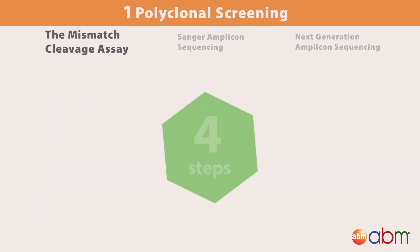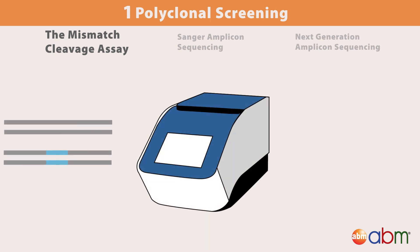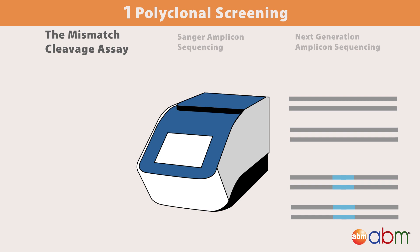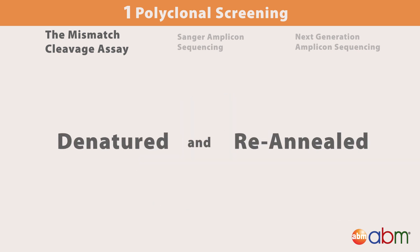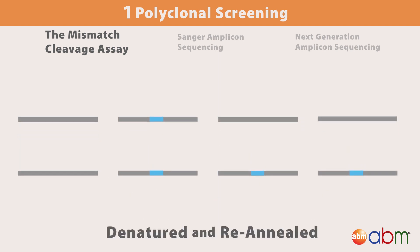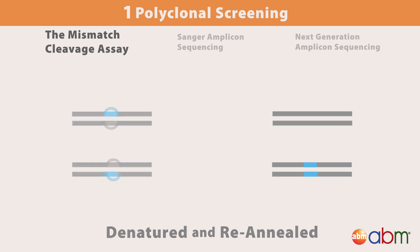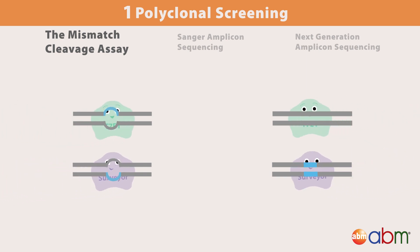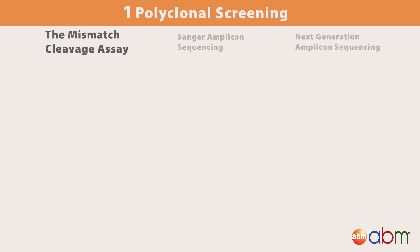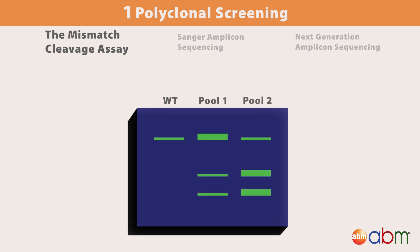These specialized nucleases create a double-stranded break at the site of a mismatch between two different strands of annealed DNA. The Mismatch Cleavage Detection Assay consists of four steps: 1. The edited region is PCR-amplified. 2. The DNA strands are denatured, then re-annealed — the strands will separate, then randomly rehybridize, creating heteroduplexes if editing has occurred. 3. DNA is treated with T7E1 or Surveyor Nuclease, and will be cut only if the strands have formed a heteroduplex. 4. The cleaved DNA is run on an agarose gel — if cleavage bands are present, a portion of the pool has been edited.